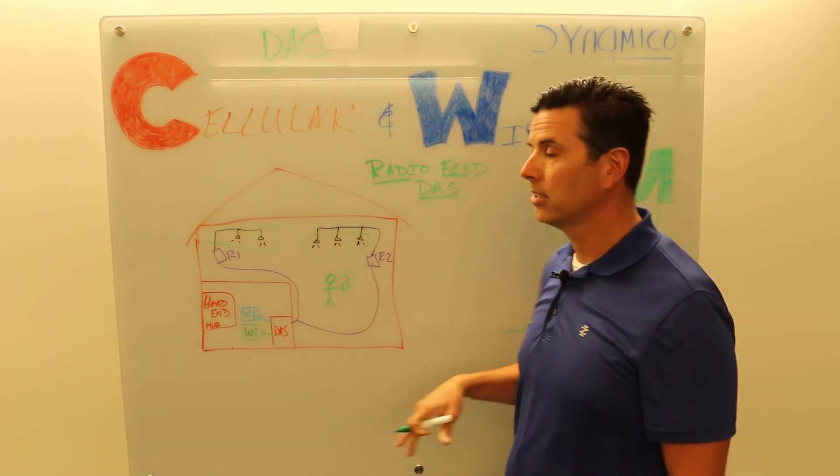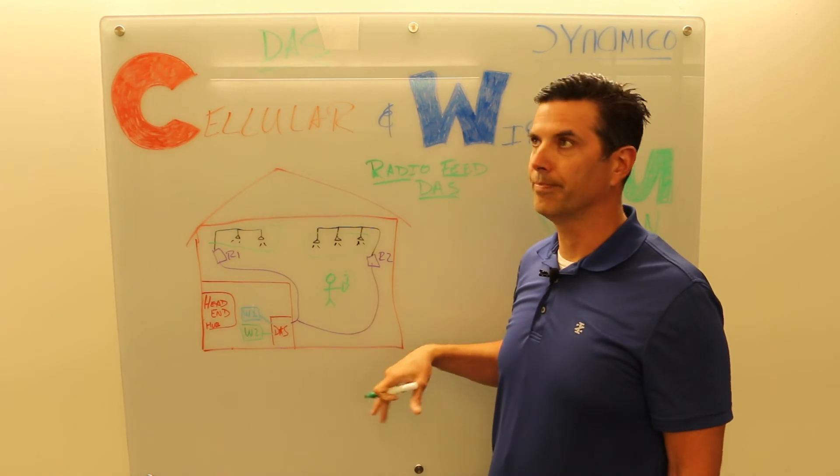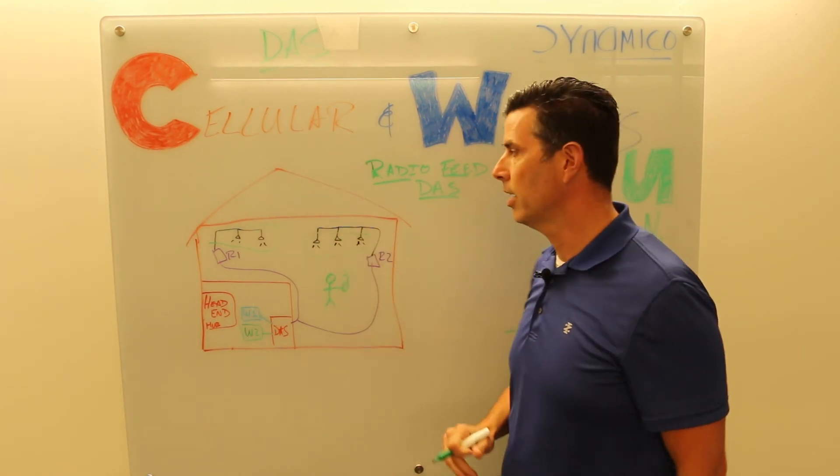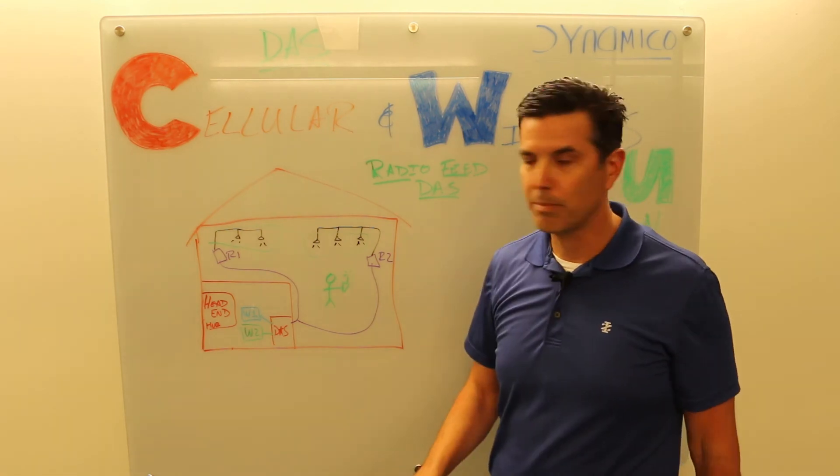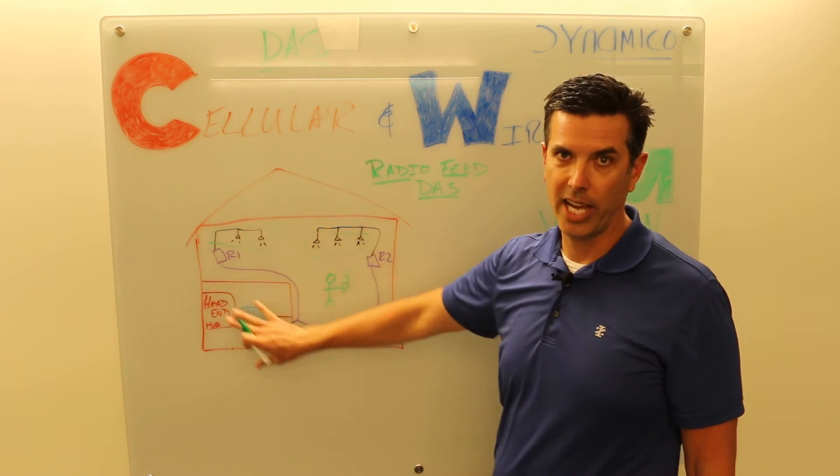Now if you're lucky, sometimes these stadiums, these buildings, these bank vaults that are really, really well built or downstairs in a lower parking basement, you don't even get signals from the macro site, so it's really easy to design a DAS there. You have only one option, it's the DAS.